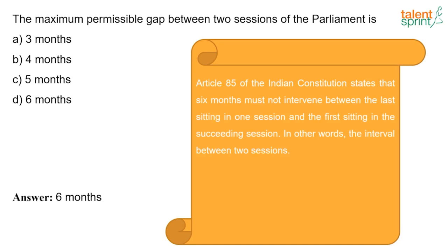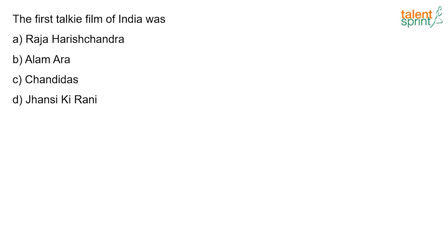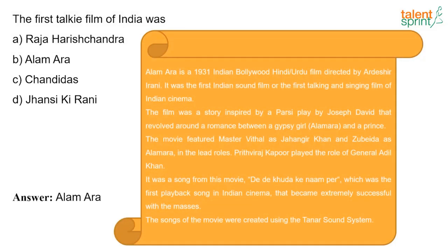The first talkie film of India was Alam Ara. It is an Indian Bollywood Hindi and Urdu film directed by Ardeshir Irani in 1931 — the first Indian sound film and the first talking and singing film of Indian cinema. The film was inspired by a Parsi play and revolves around a romance between a gypsy girl named Alam Ara and a prince. The song 'De De Khuda Ke Naam Par' from this movie was the first playback song in Indian cinema and became extremely successful.